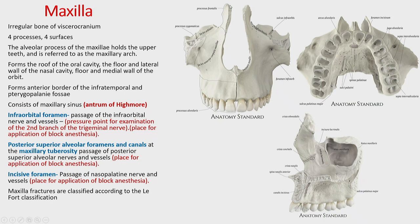Between the anterior lacrimal crest of the maxilla and the posterior lacrimal crest of the lacrimal bone is the lacrimal groove, which lodges the sac of the lacrimal gland. Tears accumulate there and are compressed by the orbicularis oculi muscle, passing through the nasolacrimal duct into the nasal cavity, opening below the inferior nasal concha at the inferior nasal meatus. On the nasal surface you can also see the opening of the maxillary sinus — the maxillary hiatus, or semilunar hiatus when partly covered.